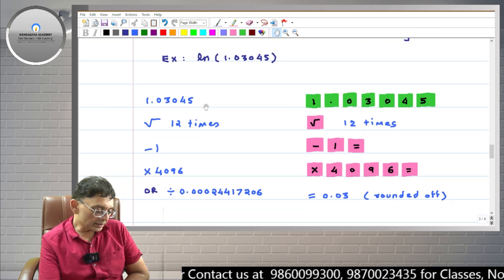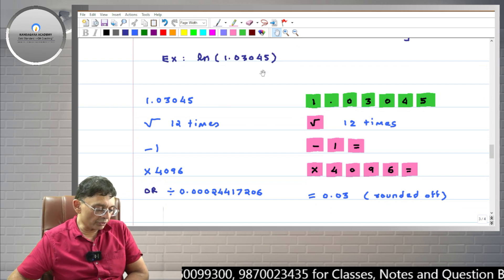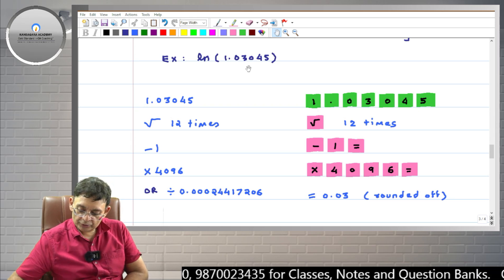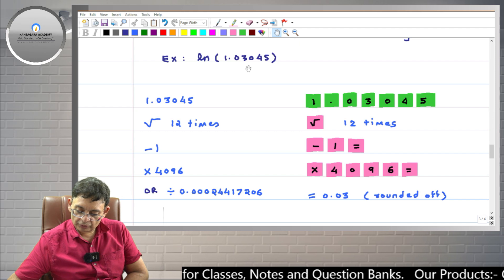Now enter the value first. So do the process with me. Let's enter 1.03045. So I am doing that 1.03045.